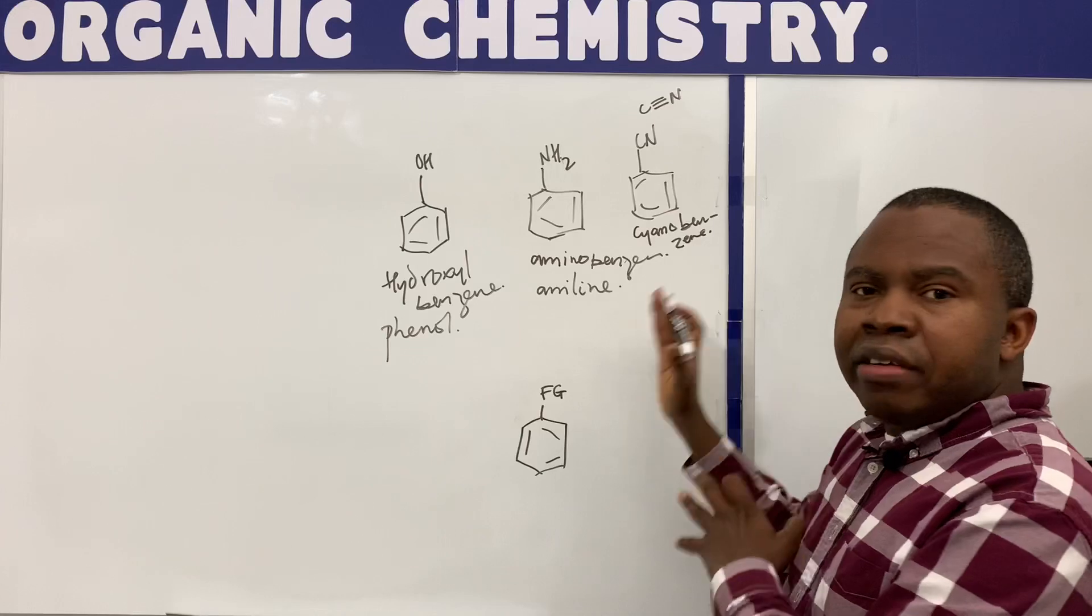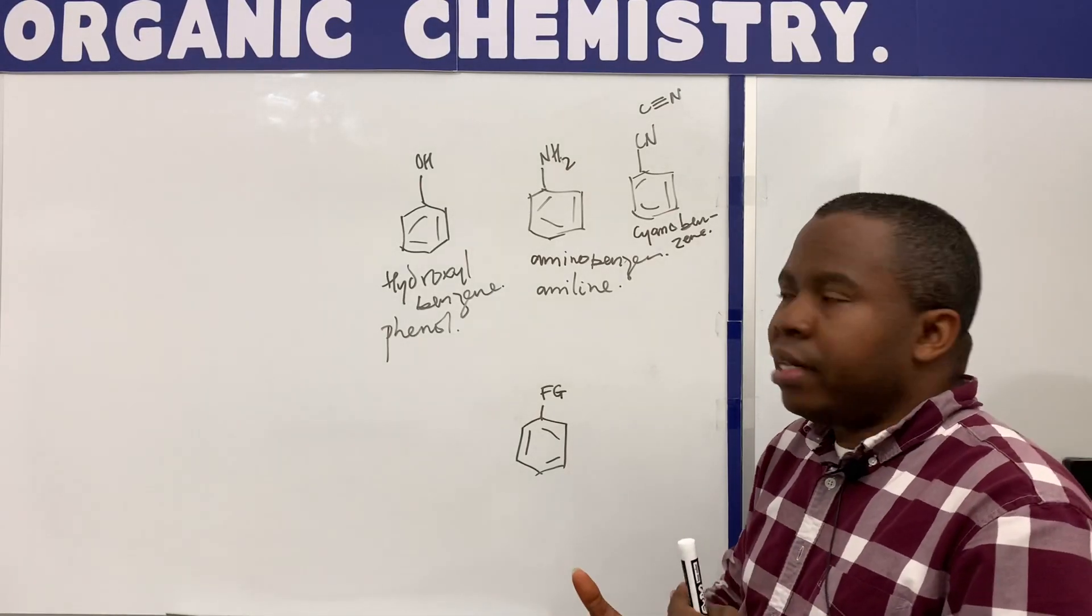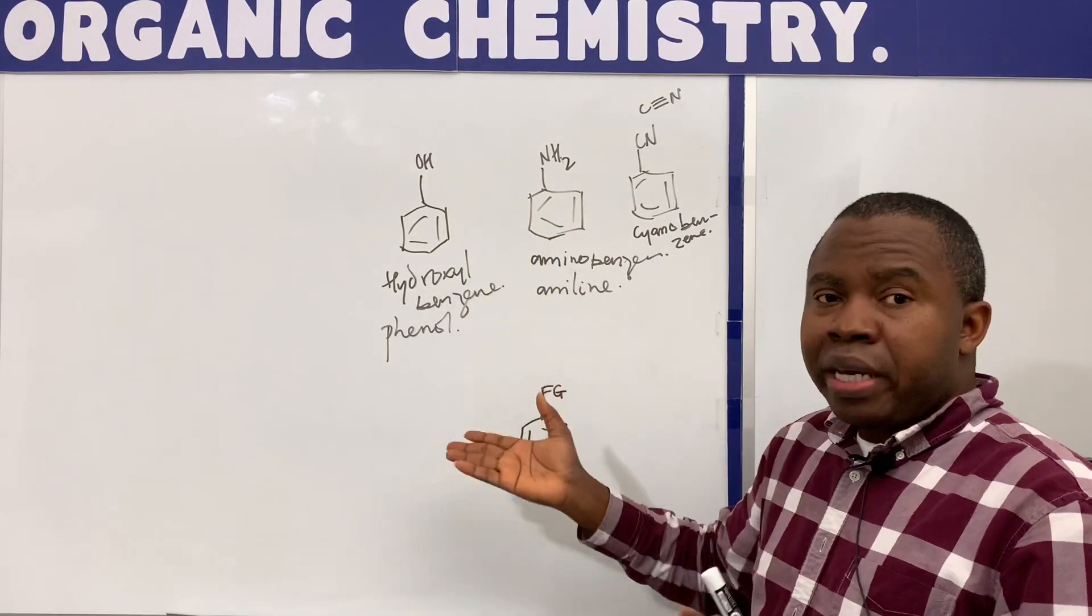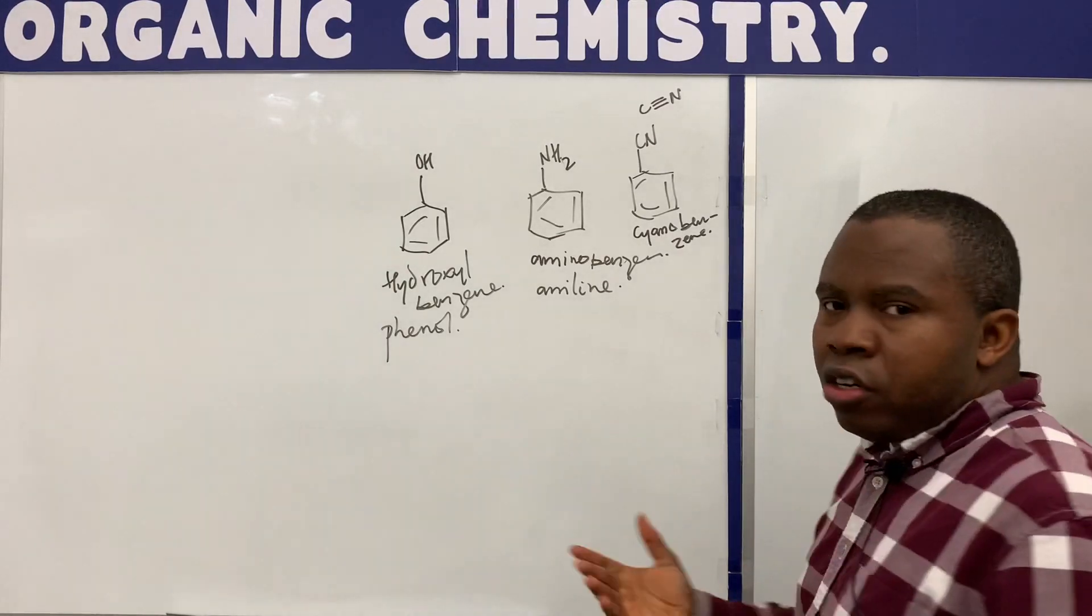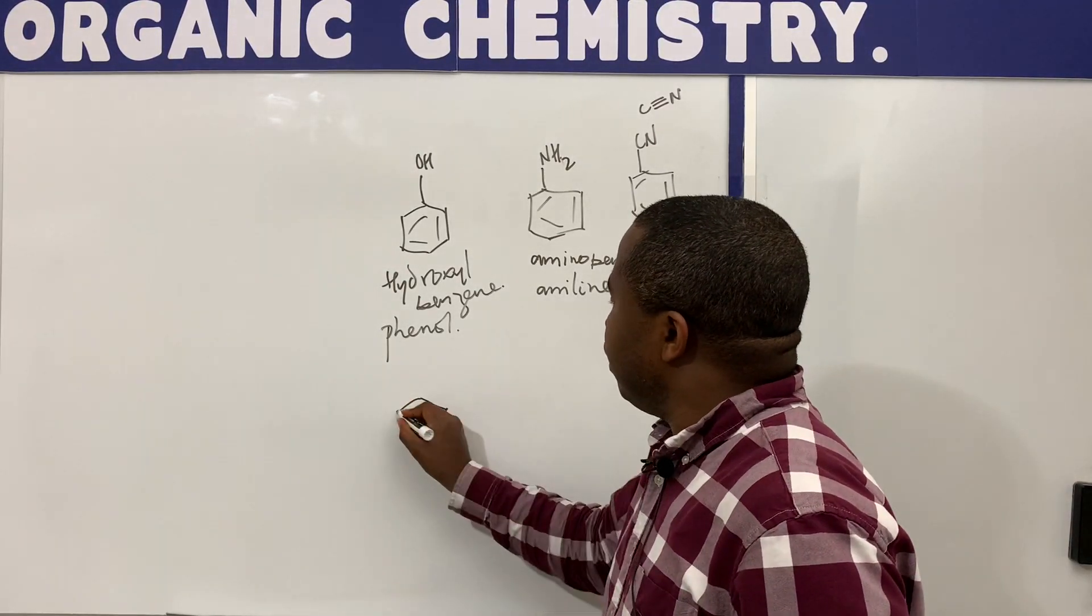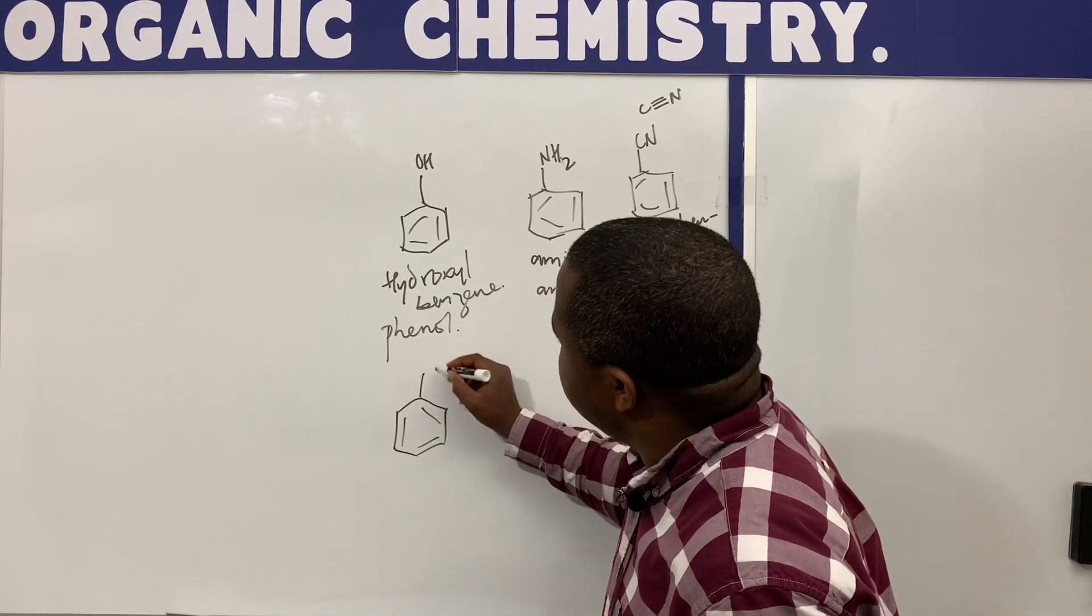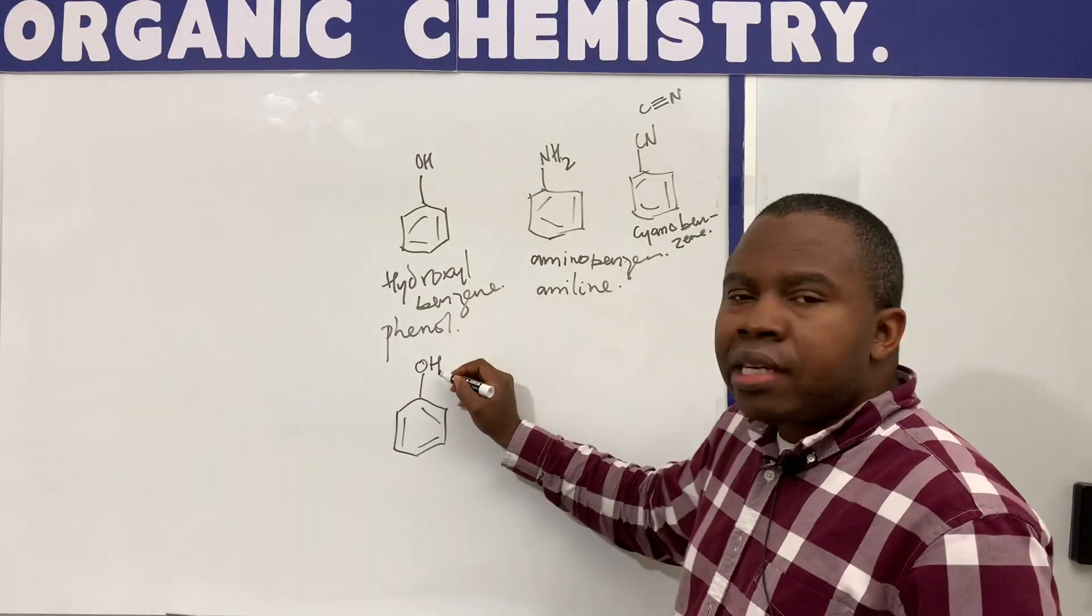So these are all derivatives of benzene. But then when you start having other substituents that are attached to the ring in the derivatives of benzene, then things start getting a little bit complex. Just one key thing to the naming convention is that you focus on the functional group. You prioritize the functional group.